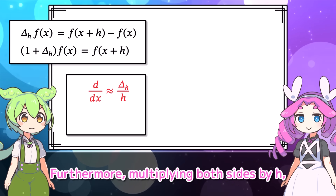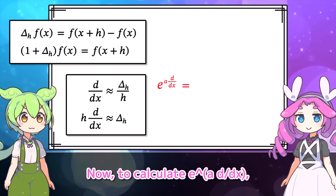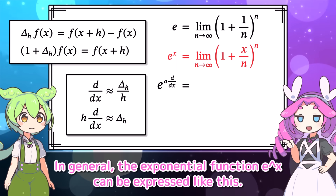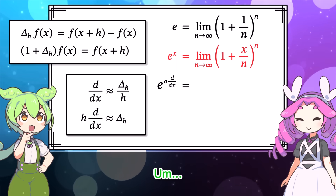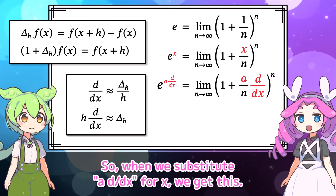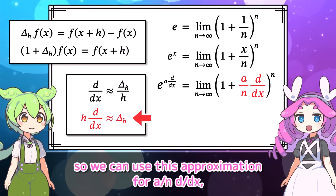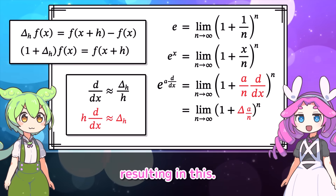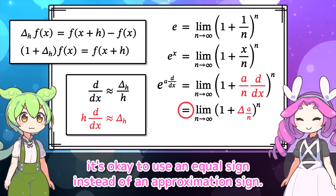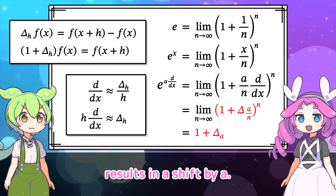Furthermore, multiplying both sides by H, we can express delta sub H in terms of D by DX like this. Now, to calculate E to the A·D by DX, remember that Euler's number E is defined in this way. In general, the exponential function E to the X can be expressed like this. Sundeman, do you know what to do next? We're going to substitute A·D by DX for X in E to the X again. Yes. So when we substitute A·D by DX for X, we get this. Here, as N becomes infinitely large, A over N approaches zero. So we can use this approximation for A over N · D by DX, resulting in this. Since N approaches infinity, it's okay to use an equal sign instead of an approximation sign. Also, 1 plus delta is the shift operator itself. So, repeating the A over N shift N times results in a shift by A.